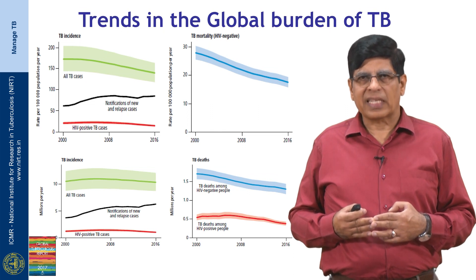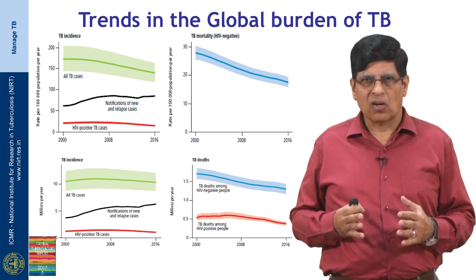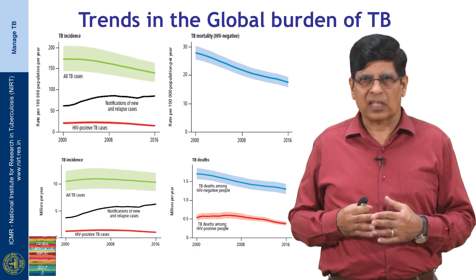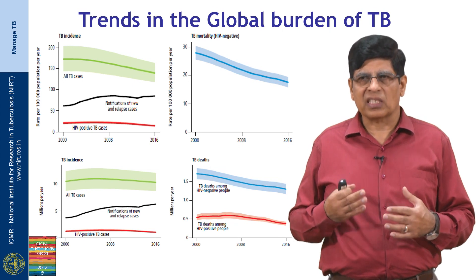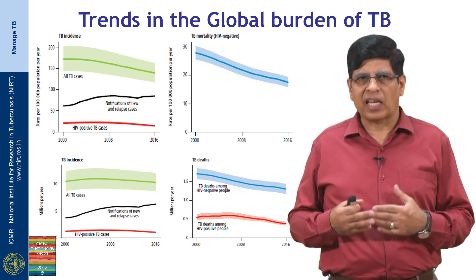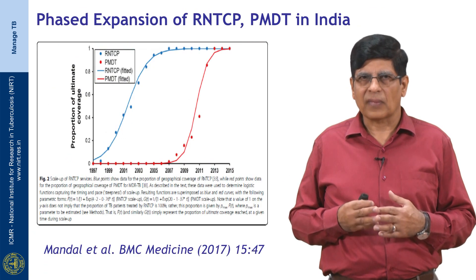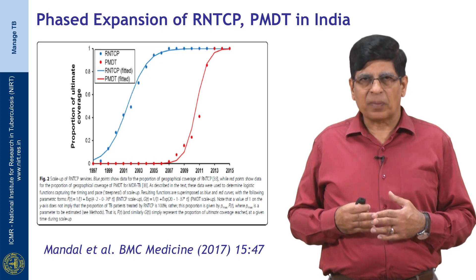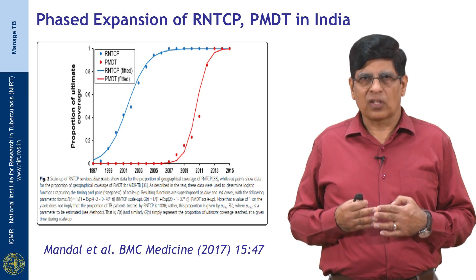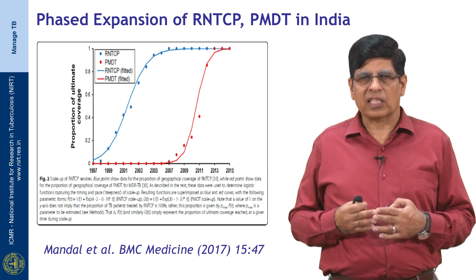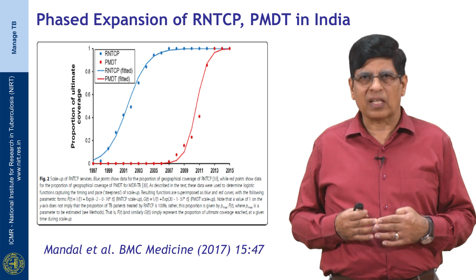However, the decline is not so significant in terms of absolute numbers of deaths or incident cases each year, primarily because of increasing population size, changes in age structure, and increased prevalence of risk factors like diabetes mellitus. RNTCP was initiated in India during 1997 and expanded in a phased manner to cover 100% of the population geographically by 2006.